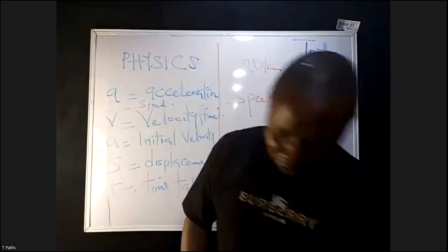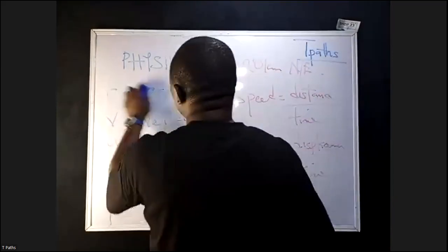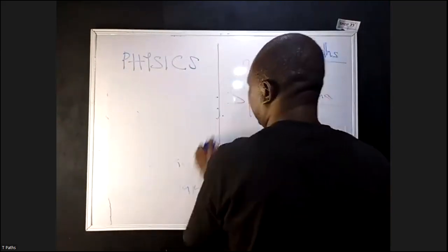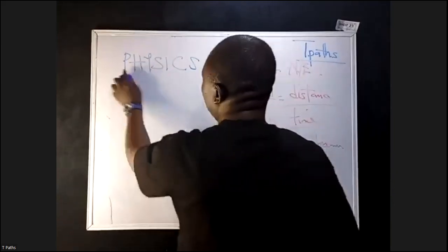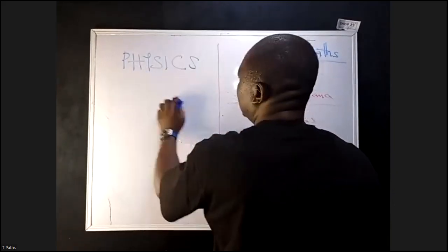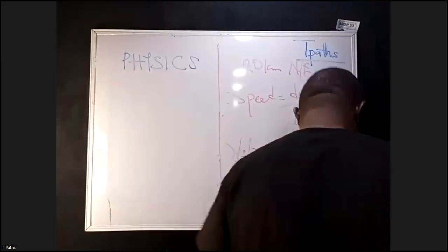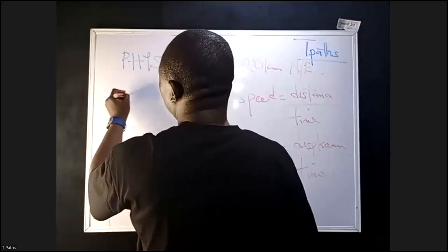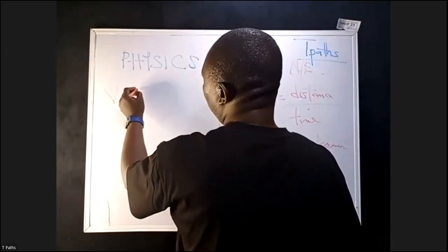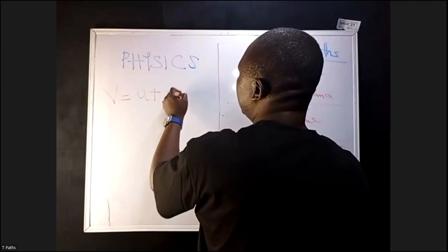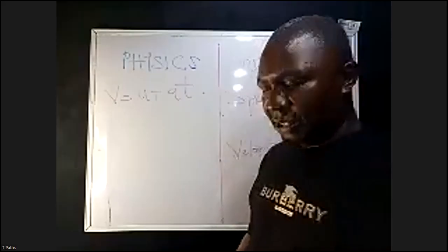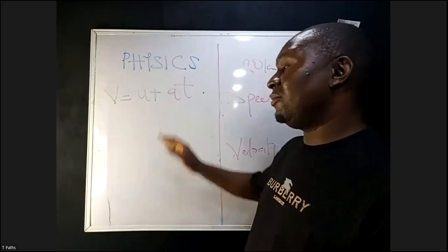Now let's go to our main topic today — equation of motion. The first one is velocity: V equals U plus AT. That is the first equation of motion.